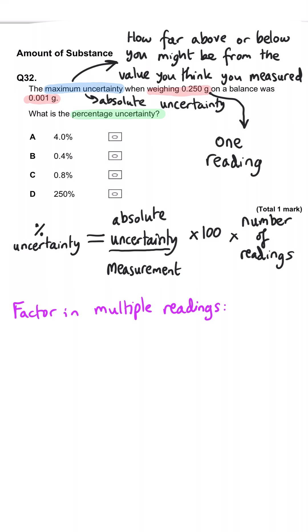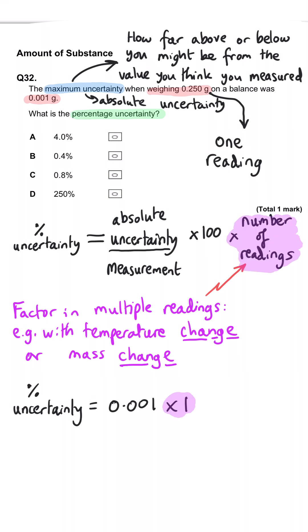We also need to be mindful of the fact that we need to account for any multiple readings that we might be taking for a particular measurement. So for instance, a change in temperature or a change in mass. Here it's just a single reading that we're taking, so we only have one of that maximum uncertainty. We divide it by 0.25, we multiply it by 100, and we get 0.4%, and so B is the correct answer.